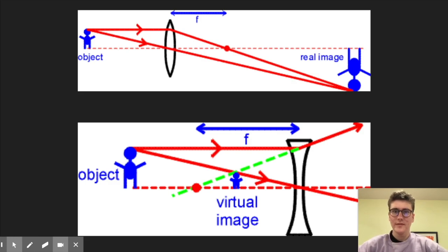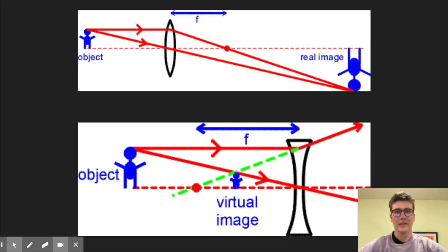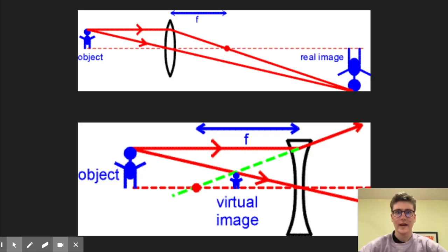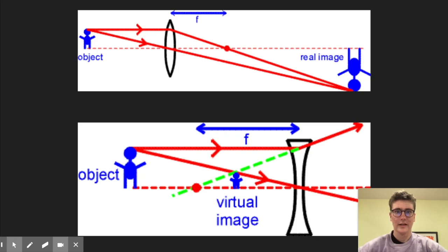Contradictory to what you might previously know, there are two kinds of images: a real image and a virtual image, and they are produced in different distortions of light. You might think that a real image is the same as how it looks to the bare eye. However, a real image is actually a flipped version. Real images are caused by convex lenses, like the one used in refracting telescopes.